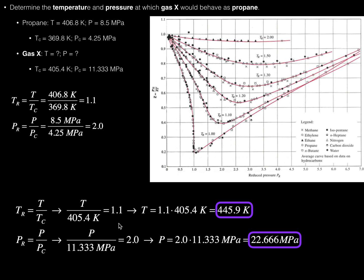To really make sure that they would behave the same, gas X would also have to have a reduced pressure of 2.0. Recall that reduced pressure is pressure over the critical pressure. So I set the reduced pressure equal to 2.0, giving pressure divided by the critical pressure of 11.333 megapascals equal to 2.0. Solving, the pressure is 2.0 × 11.333 megapascals, which equals 22.666 megapascals.